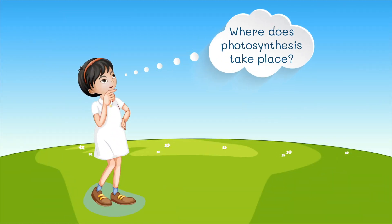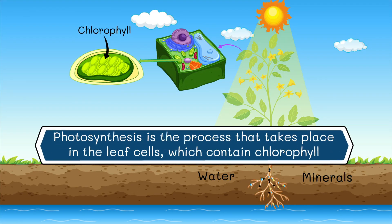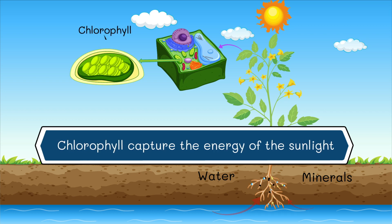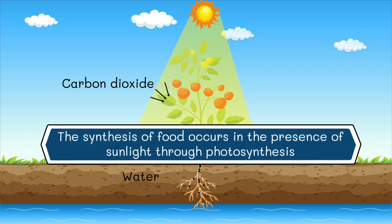Where does photosynthesis take place? Photosynthesis is the process that takes place in the leaf cells which contain chlorophyll. Chlorophyll is a pigment essential for photosynthesis and is present in the chloroplast of plant cells. The function of chlorophyll is to capture the energy of sunlight. This energy is used to synthesize food from carbon dioxide and water, and the synthesis of food occurs in the presence of sunlight.